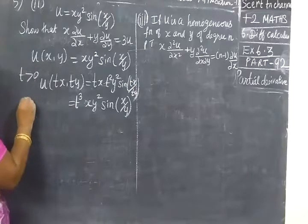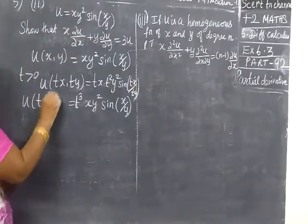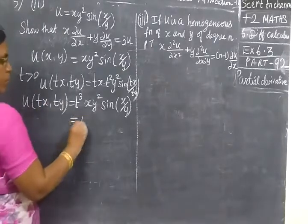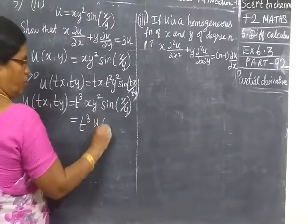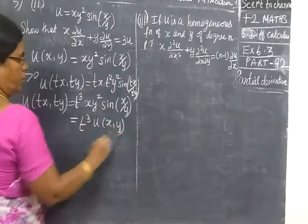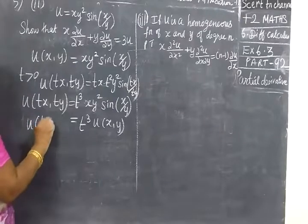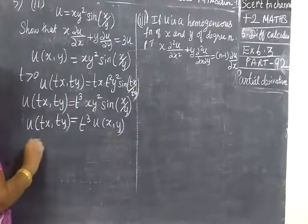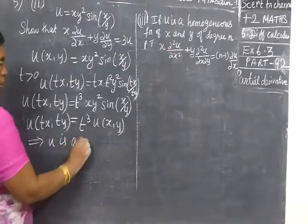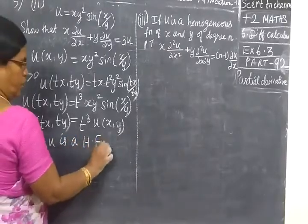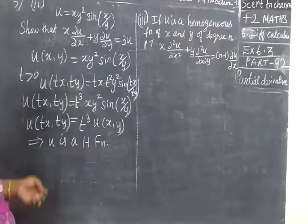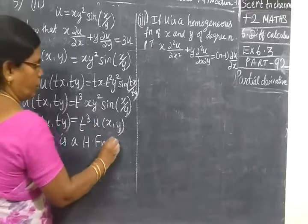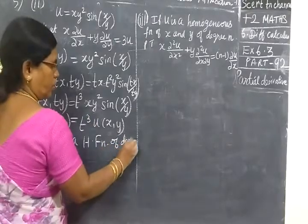In the u of tx, ty is this, it is a homogeneous function. This implies u is a homogeneous function. Previous class, u of tx, ty equal to the degree of what? Degree 3.